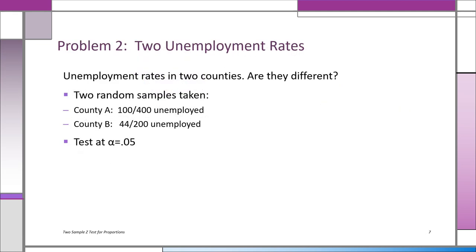In problem 2, we're comparing two unemployment rates, the unemployment rates for County A and for County B. Remember, a rate is just a proportion, and if we're comparing two proportions, we're asking the question: are they really the same, are they just two different samples taken from the same population, or are they statistically different? We're going to test that at alpha equals 0.05.